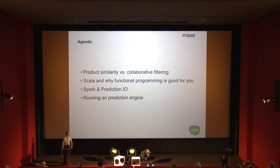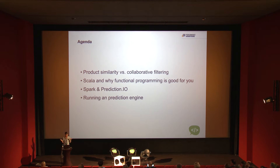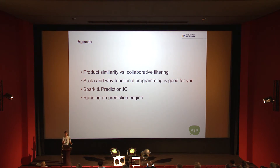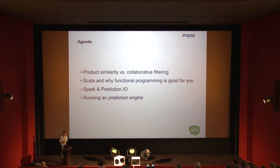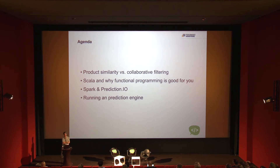In this presentation, we're going to look at two different types of recommenders. One is product similarity, which you get in pretty much any e-commerce shop. The other is what everybody knows from Amazon: people who looked at this also looked at that. We'll also look at Scala and functional programming, and at the end, Spark and Prediction.io — two very powerful tools for building such an engine.